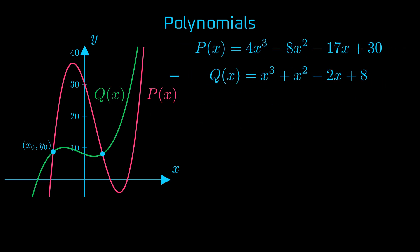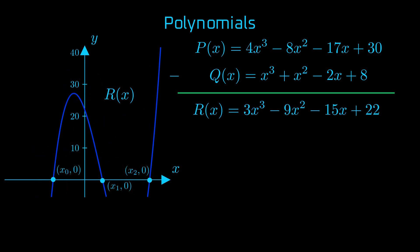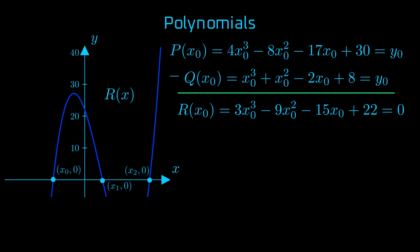If we subtract one polynomial from another, say p minus q, the result is a new polynomial r of x. If p equals q at x0, then the polynomial r will have x0 as a root, meaning the resulting polynomial is 0 at x0.